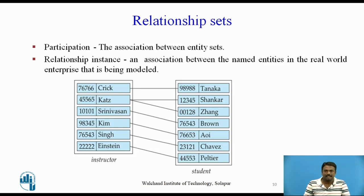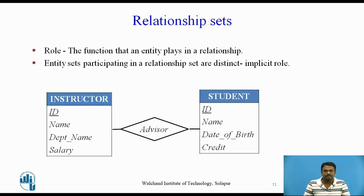A relationship instance in an entity relationship schema represents an association between the named entities in the real-world enterprise being modeled. For example, the individual instructor Katz, who has instructor ID 45565, and the student entity Shankar, whose ID is 12345, participate in a relationship instance of advisor. This represents that instructor Katz is advising student Shankar. The function that an entity plays in a relationship is called that entity's role. Since entity sets participating in a relationship set are generally distinct, roles are implicit and are not usually specified.